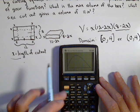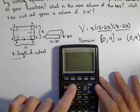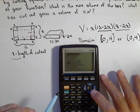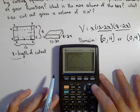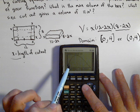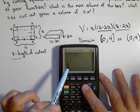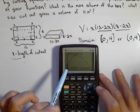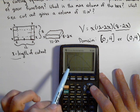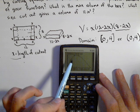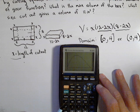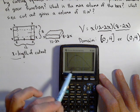Now to do a maximum in the calculator, you do second, calculate. Number 4 there is maximum. Now it's going to ask for a left bound and a right bound. I have to move that cursor to the left side of this maximum, so over here. Now for my right bound, I've got to go to the right side, any place to the right. But I need my maximum to be between my left and my right bound. I asked the graphing calculator to find it.